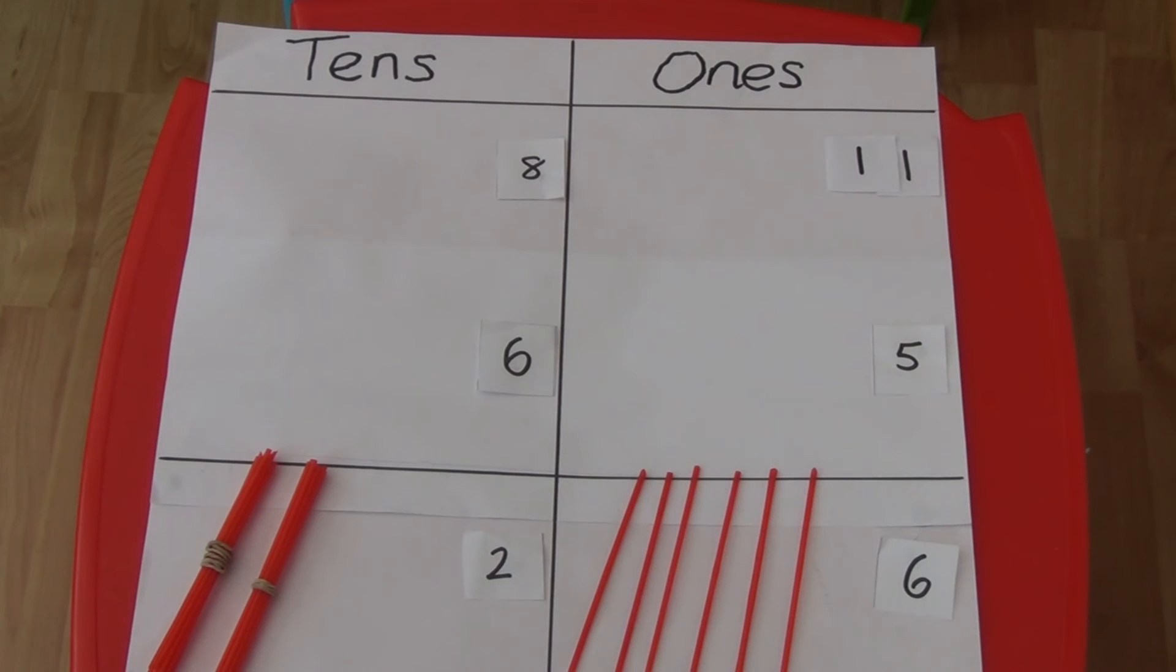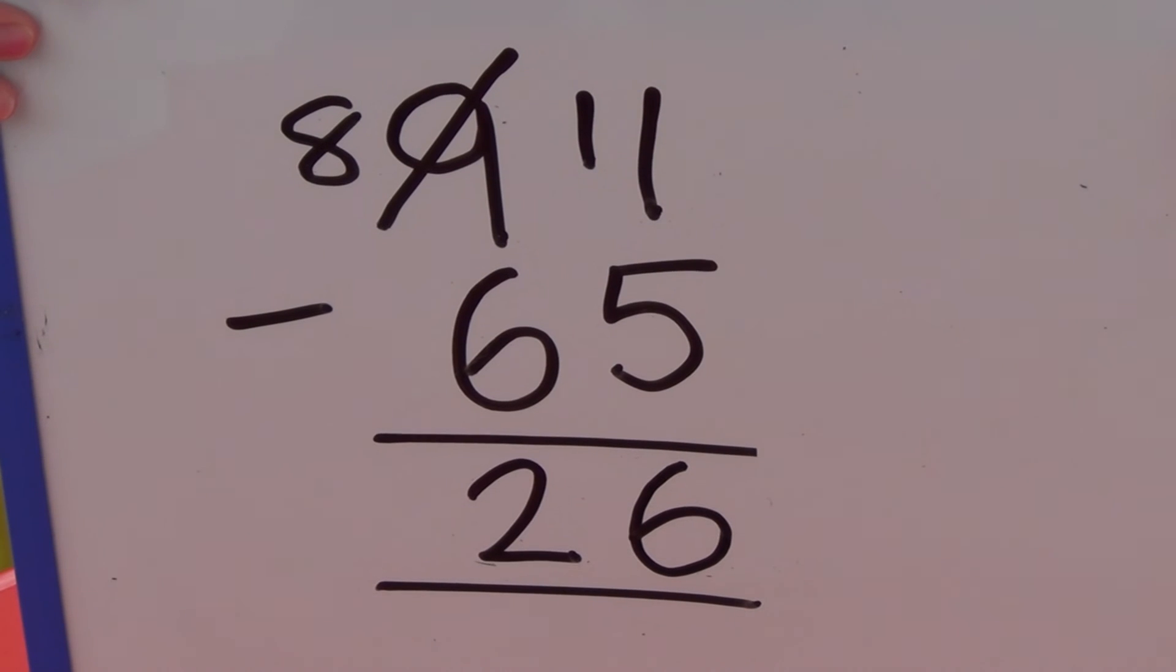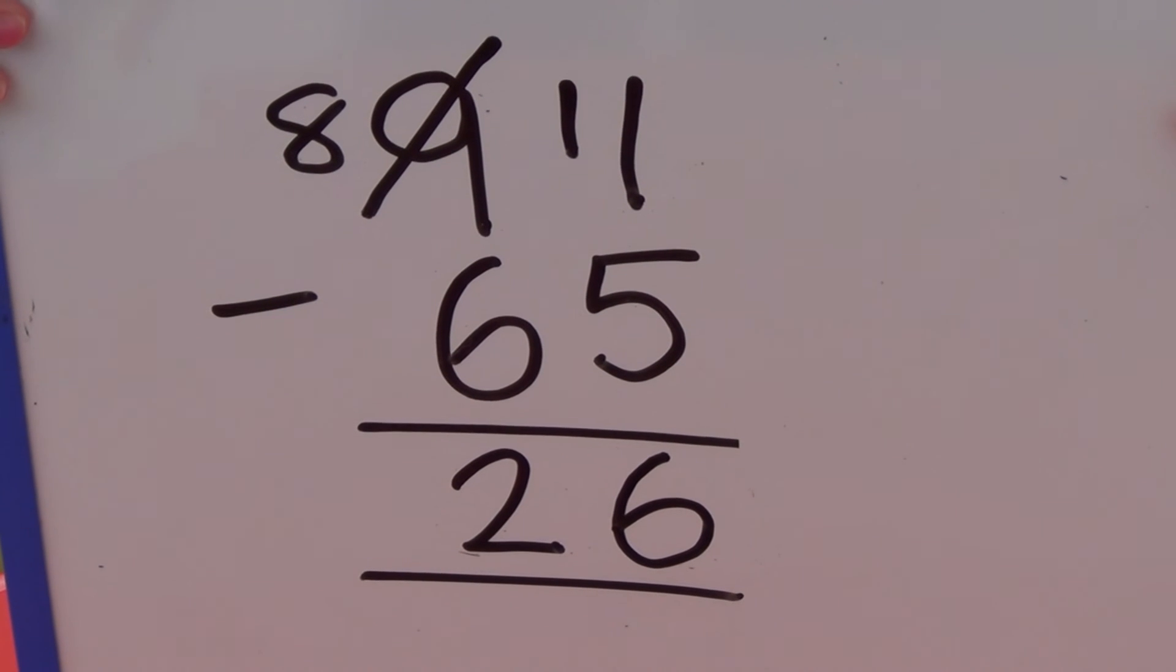11 straws take away 5 is 6 and 8 tens take away 6 is 2 which is 20. We can see this as written method without straws. So 91 take away 65 equals 26.